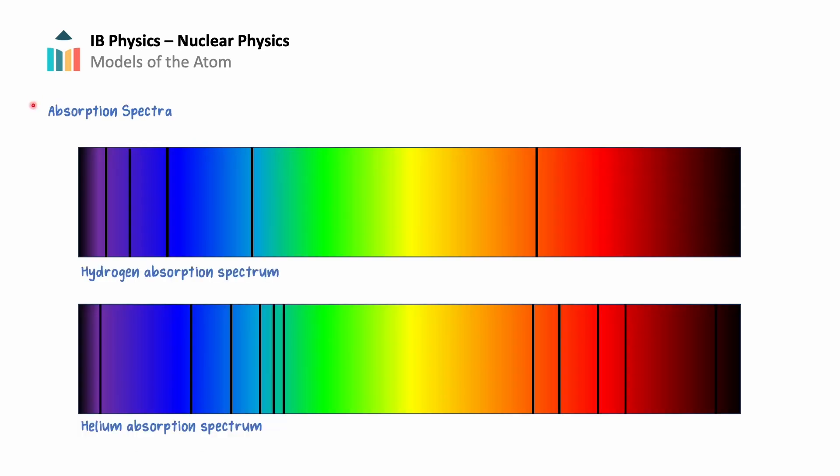As shown in the above diagrams, the absorption frequencies of hydrogen and helium are different, as they are for all elements. In that way, the absorption spectra can also be used to analyze the chemical composition of structures.